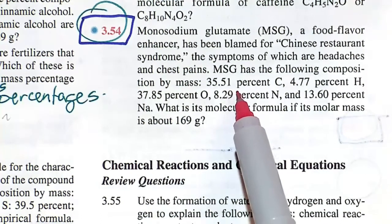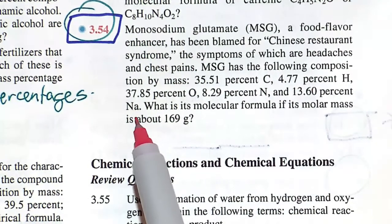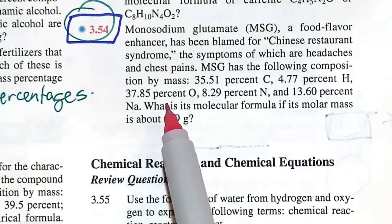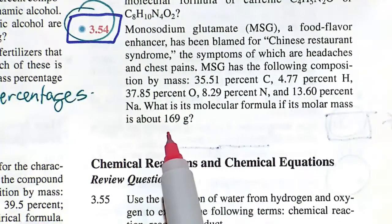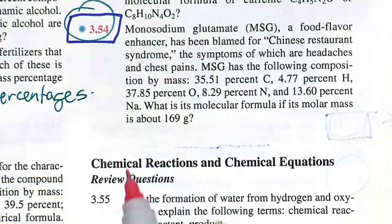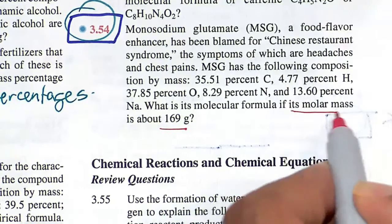So it's 35.151% carbon, 4.77% hydrogen, 37.85% oxygen, 8.29% nitrogen, and 13.6% sodium. So what is the molecular formula if the weight is 169 grams per mole? Molar mass is usually in grams per mole.